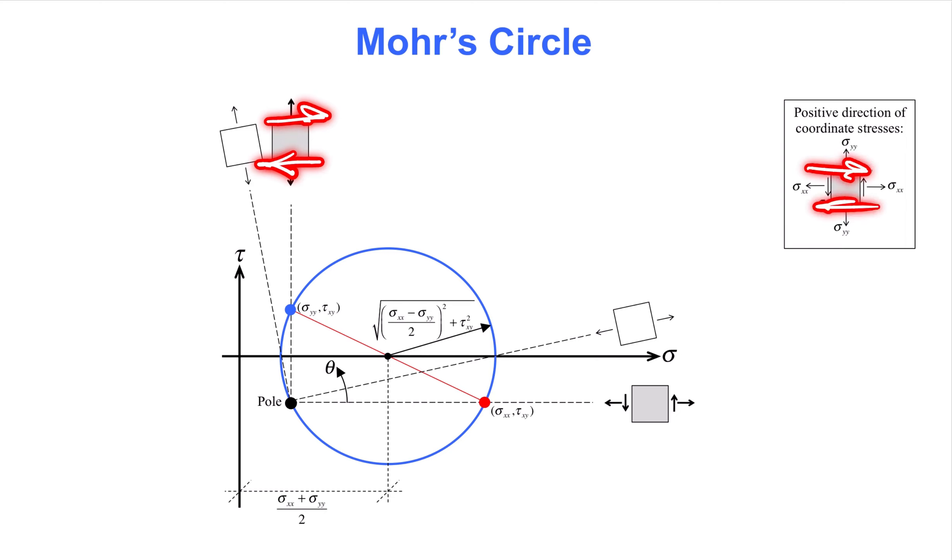From the point sigma xx and tau xy, which is on the circle, draw horizontal line until it intersects with the circle again. That point is the pole point. Alternatively, draw a vertical line from sigma yy and tau xy if you want to study sigma yy instead of sigma xx.